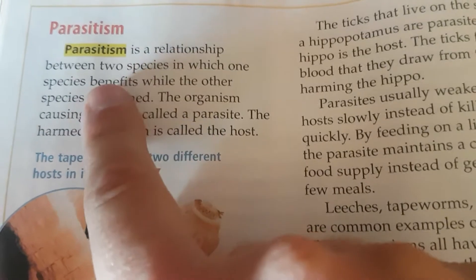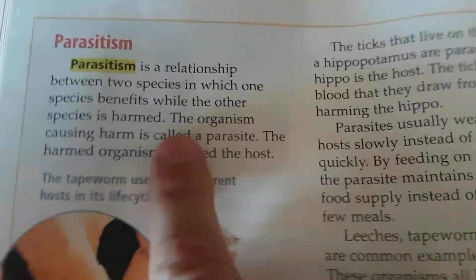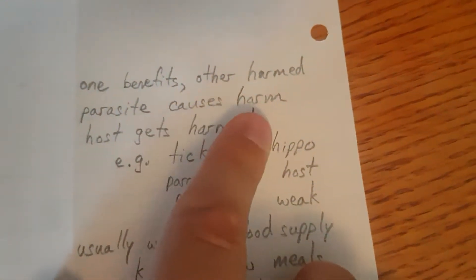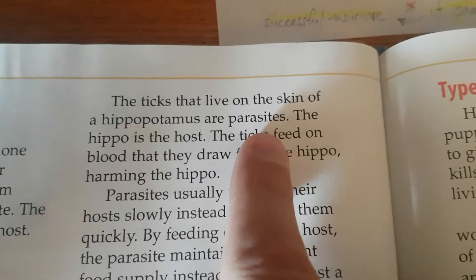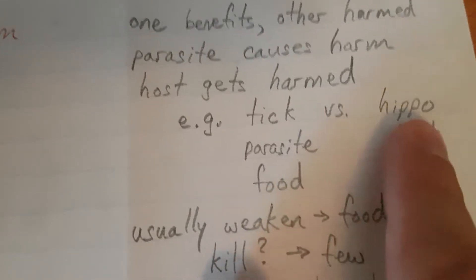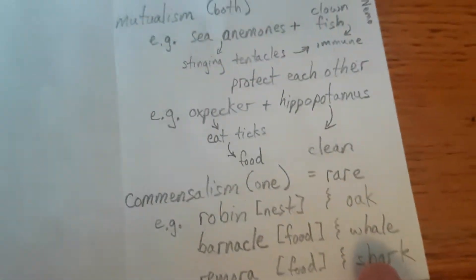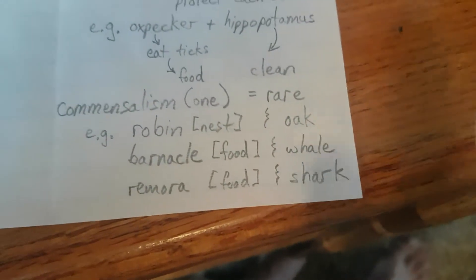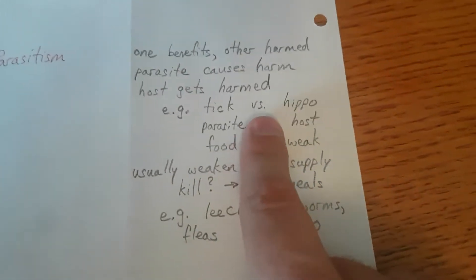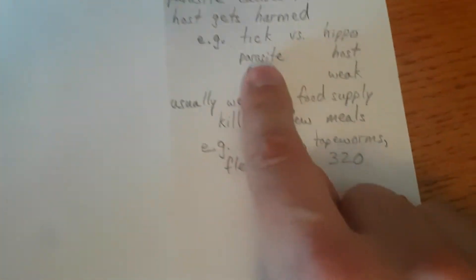Flip it over. Parasitism — in red. Parasitism is a relationship between two species in which one species benefits while the other species is harmed. So: one benefits, other harmed. The organism causing harm is called a parasite — parasite causes harm. The harmed organism is called the host — host gets harmed. The ticks that live on the skin of a hippopotamus are parasites. So let's put example: tick versus hippo. In mutualism both are benefiting so we say plus. In commensalism only one is benefiting so we just say and because the other is just kind of there. In parasitism they're working against each other, so that's a versus — tick versus hippo. The tick is the parasite and the hippo is the host.